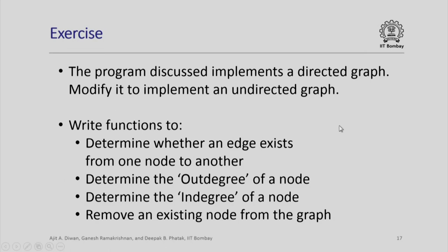As an exercise, try to implement a program which takes a directed graph description from the user and modify that program to implement an undirected graph. Also try to write functions to determine whether an edge exists from one node to another, determine the out degree and in degree of a node, or remove an existing node from the graph. These are simple exercises similar to what we have already done.